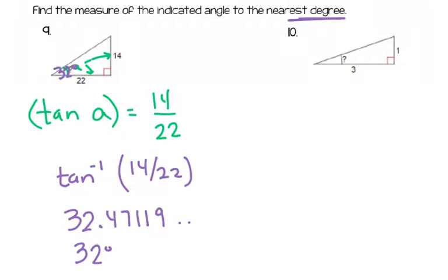Now, it's not exactly 32 degrees. So if you did tangent 32 degrees, you're not going to get exactly 14 over 22. You're going to get approximately 14 over 22, because we rounded it. Just be aware that as soon as you round anything, you're going to be a little less accurate. So we would say that that angle is about 32 degrees.